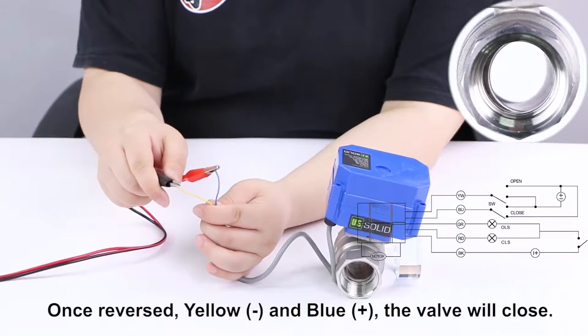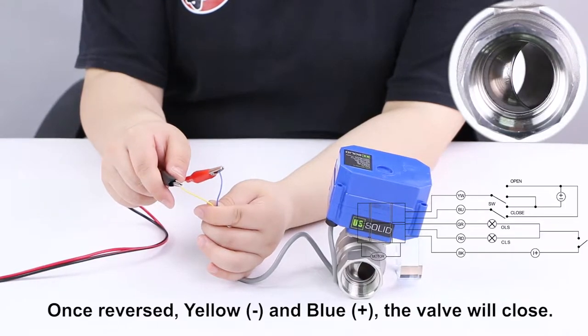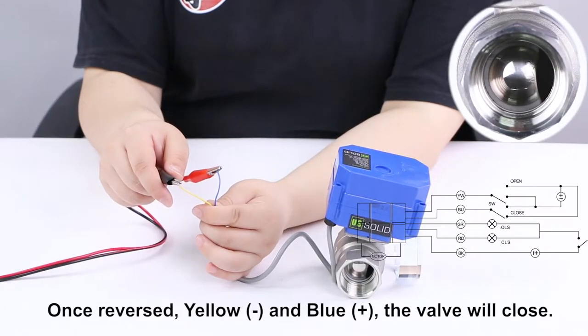Once reversed, yellow wire connected to negative pole and the blue wire connected to positive pole, the valve will close.